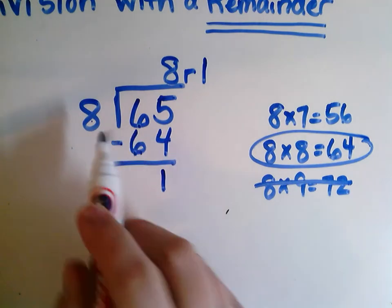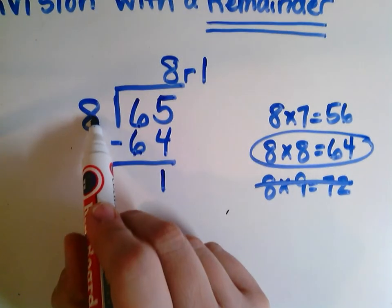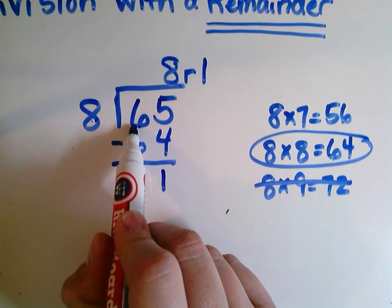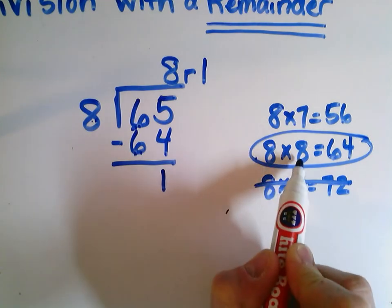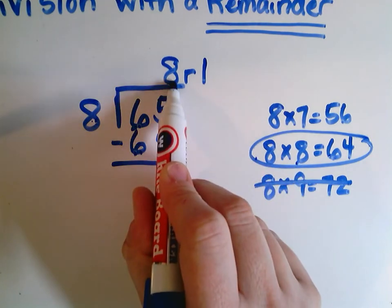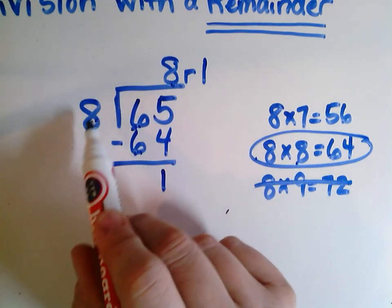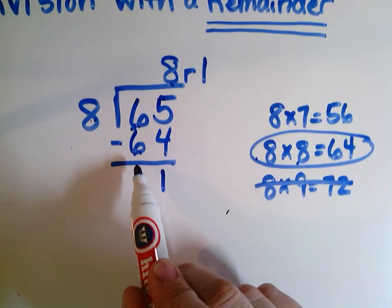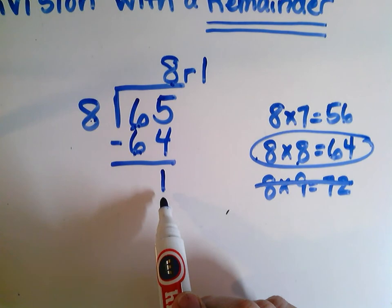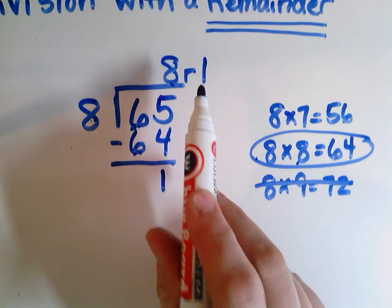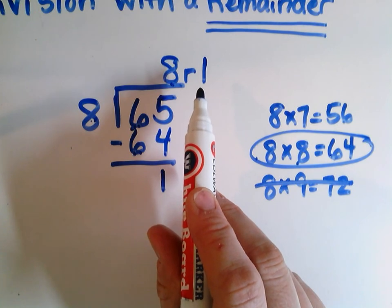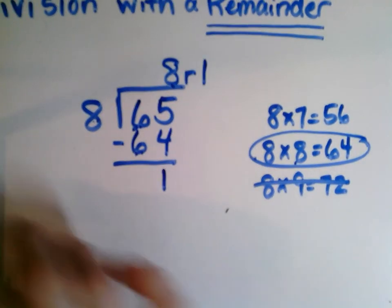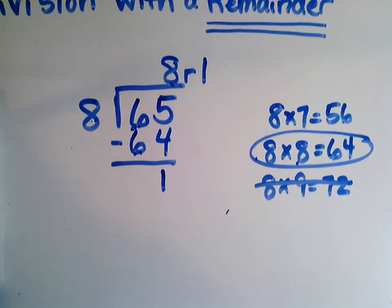So again, I think about what times 8 is going to get me closest to 65. 8 times 8 is the closest, so 8 will be my quotient. 8 times 8 is 64 — I write it underneath my 65 and subtract to find how many I have left over. I have 1 left over. So I want you to try some problems like that today, and we're going to be practicing this for a while.